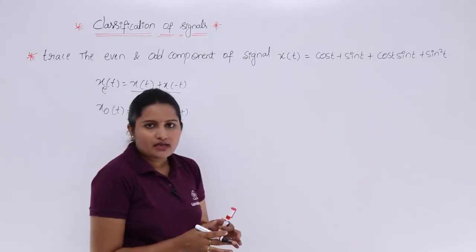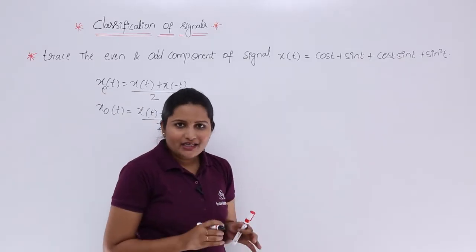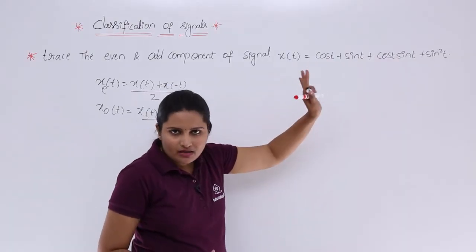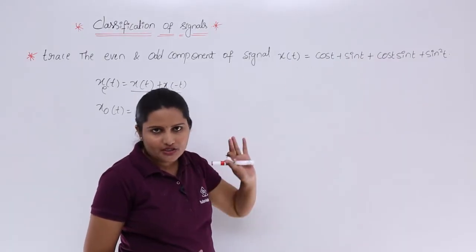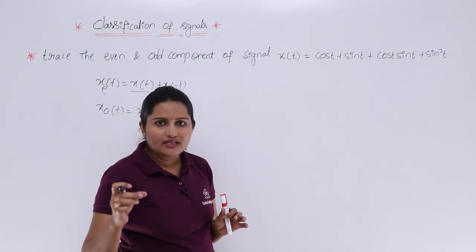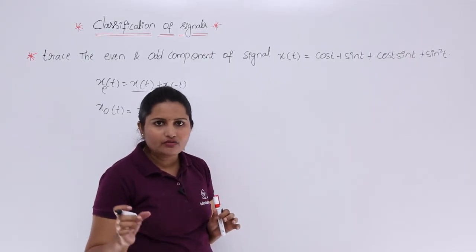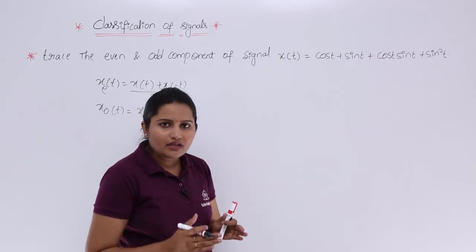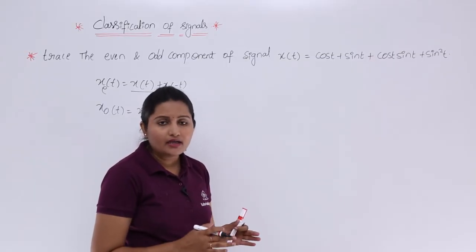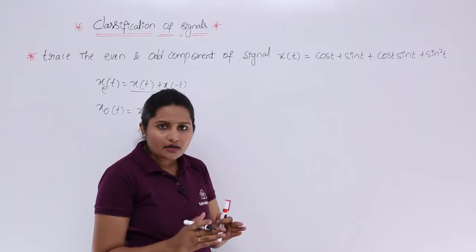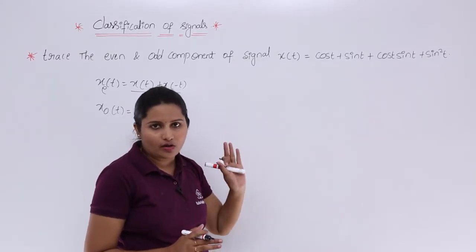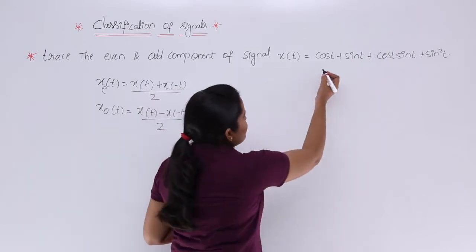There is a simpler trick to get even and odd components. In the given combination, you need to identify which individual terms are even and which are odd. All even sub-parts summed together give the even component, and all odd sub-parts clubbed together form the odd component.